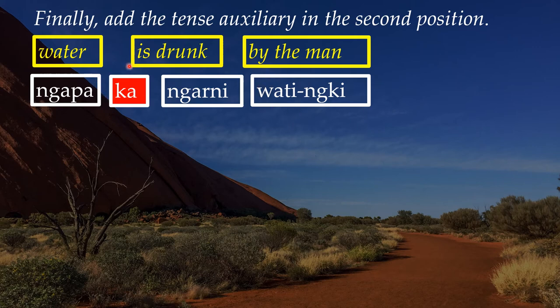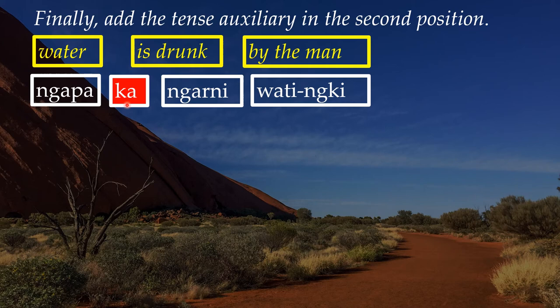So in a transitive sentence, the word Ga actually shows you that there is one actor doing something to one object. In this case, the water is drunk by the man. If you have two people doing something to many things, you have to change the auxiliary — add other suffixes to show that. It gives a lot of information. And because the grammar is so flexible, as long as Ga remains in the second position, you can rearrange the sentence in any way you like.